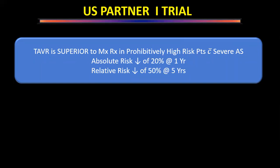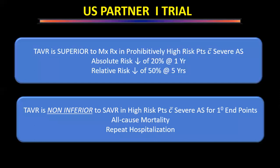Second conclusion of Partner 1: TAVI is non-inferior to surgical AVR in high-risk patients with severe aortic stenosis for primary endpoints of all-cause mortality and repeat hospitalization. Based on Partner 1 and the CoreValve Extreme Risk study, the US FDA approved TAVI for patients with prohibitive or high surgical risk.